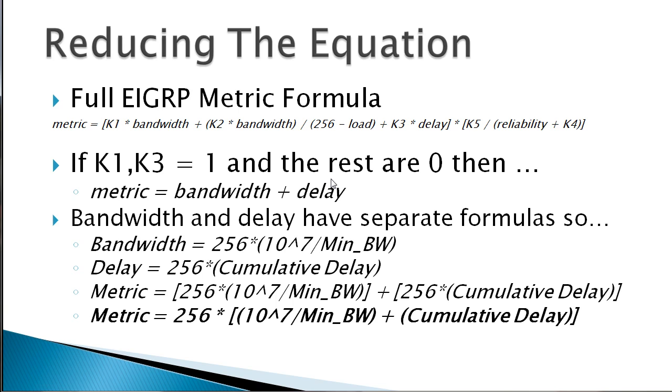Now turn back to the last slide and remember that bandwidth and delay themselves, these two guys right here, are individual formulas. So if bandwidth is this and delay is this, then really what we have here when we say bandwidth plus delay, I'm going to have 256 times 10 to the 7th over my minimum bandwidth plus 256 times cumulative delay. Now I do some simple factoring here, factor out the 256, and we have 256 times (10 to the 7th over the minimum bandwidth in kilobits plus cumulative delay). That is the bottom line and that's exactly how you get there.